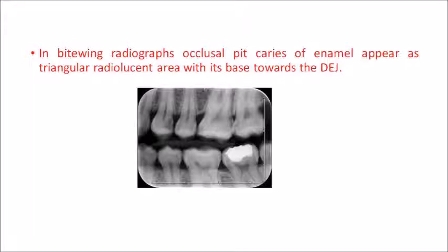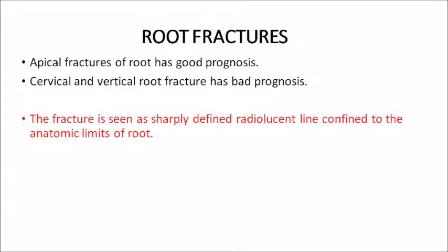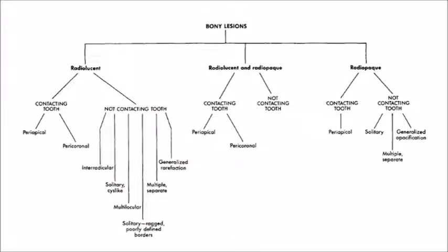Coming to root fractures: root fractures usually appear as a sharply defined radiolucent line confined to the anatomic limits of the root. Sometimes they may not be evident on the diagram. Apical fractures of the root have a good prognosis. Cervical and vertical root fractures have a very bad prognosis.